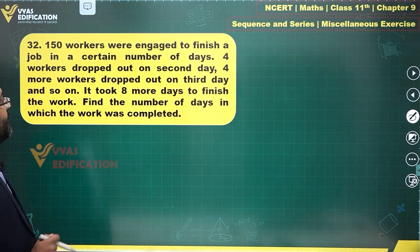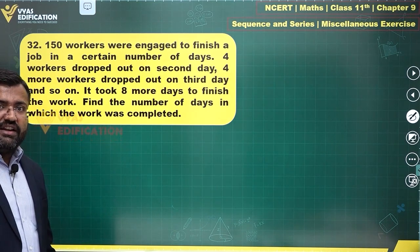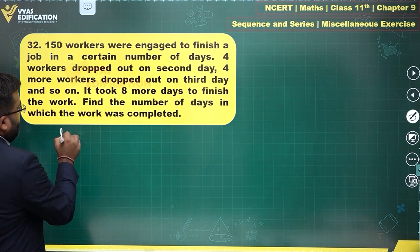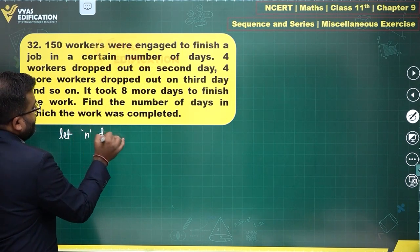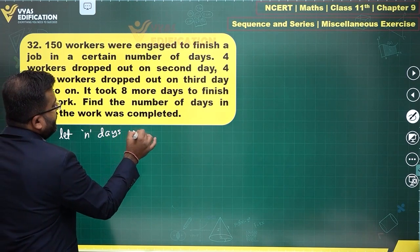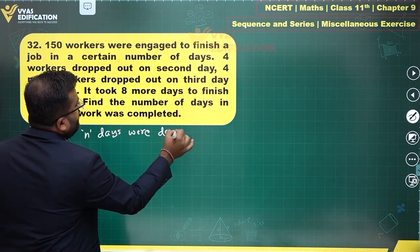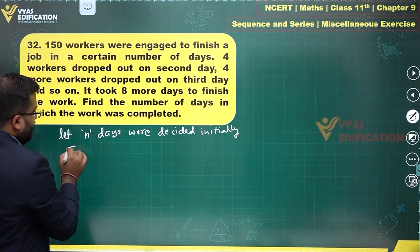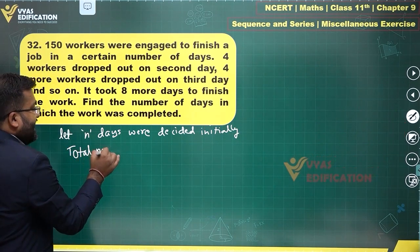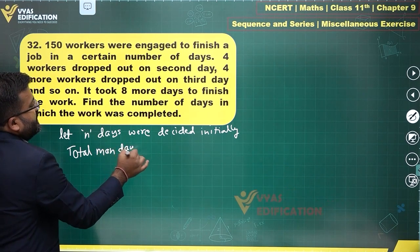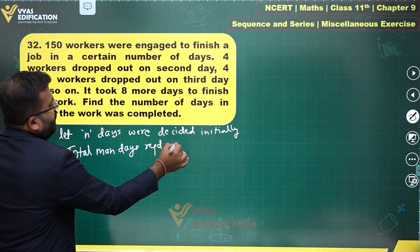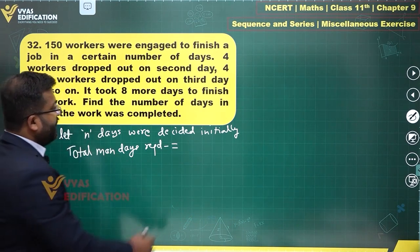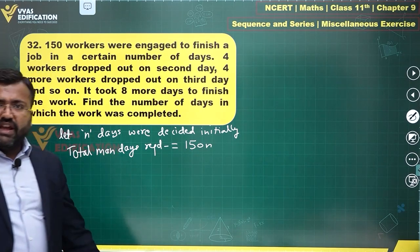Let's compare the number of man days initially decided and finally obtained. 150 workers were engaged to finish a job in a certain number of days. Let n days were decided initially. So total man days required will be n times 150. That was the plan, 150n.